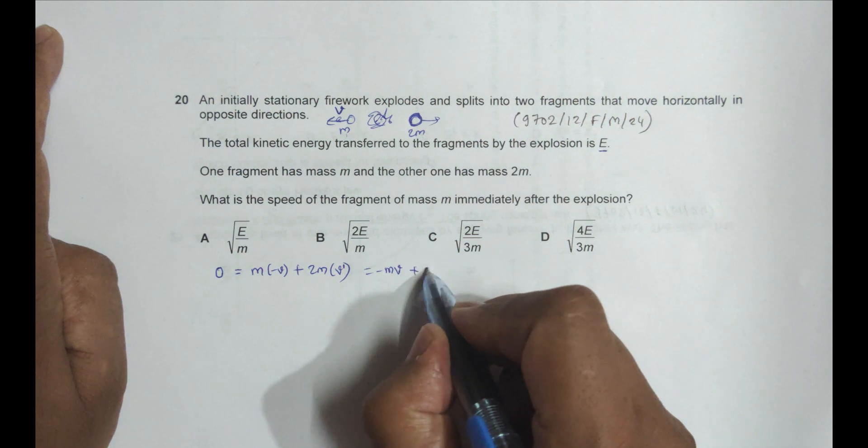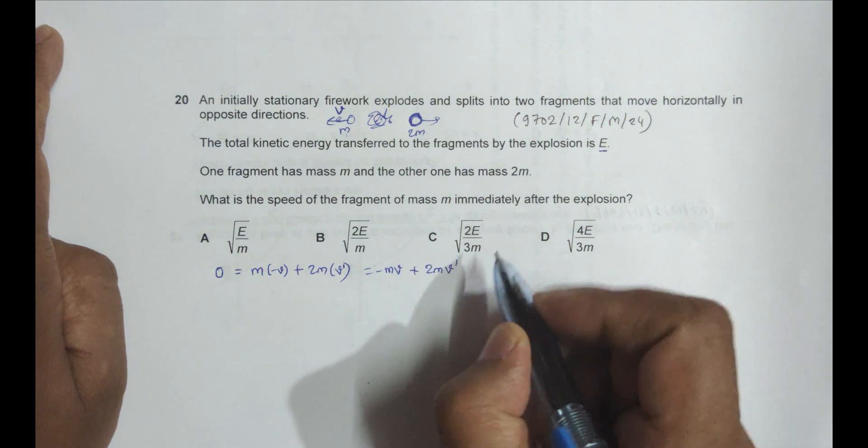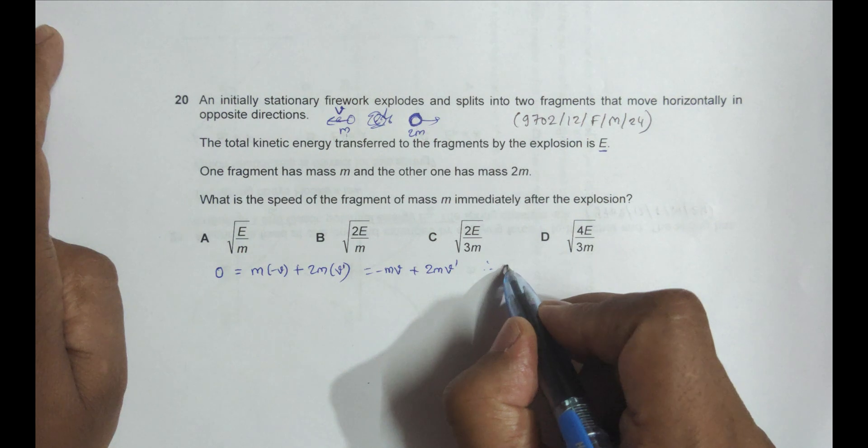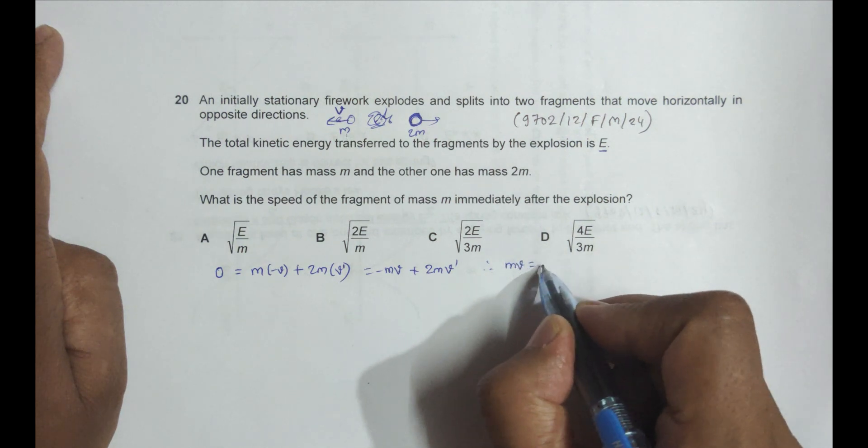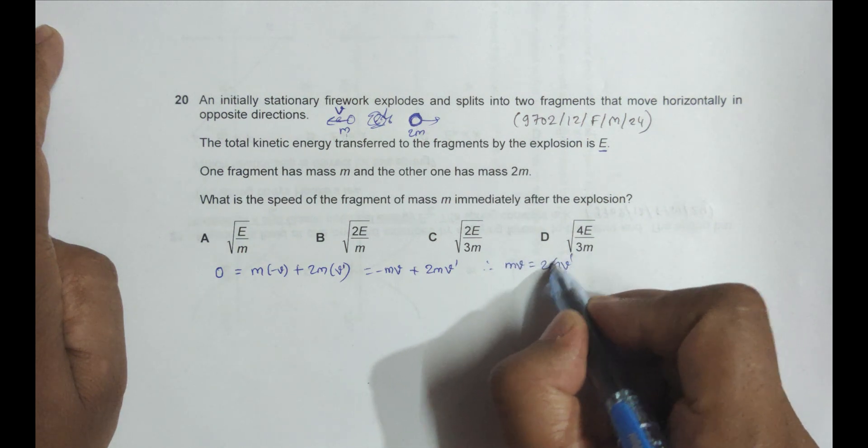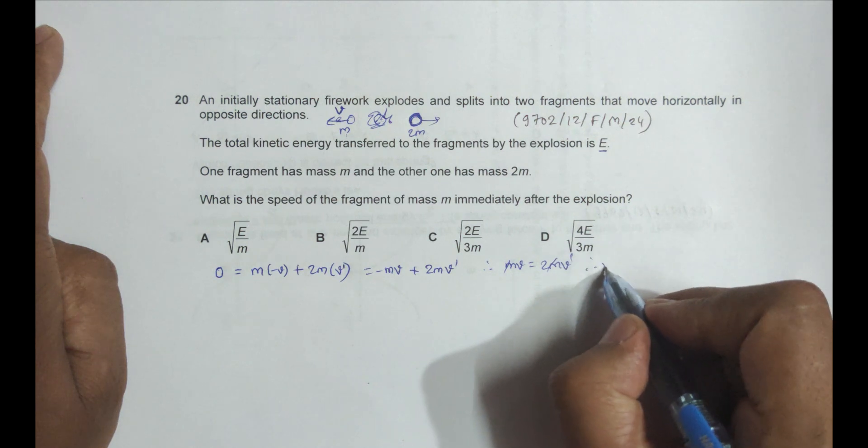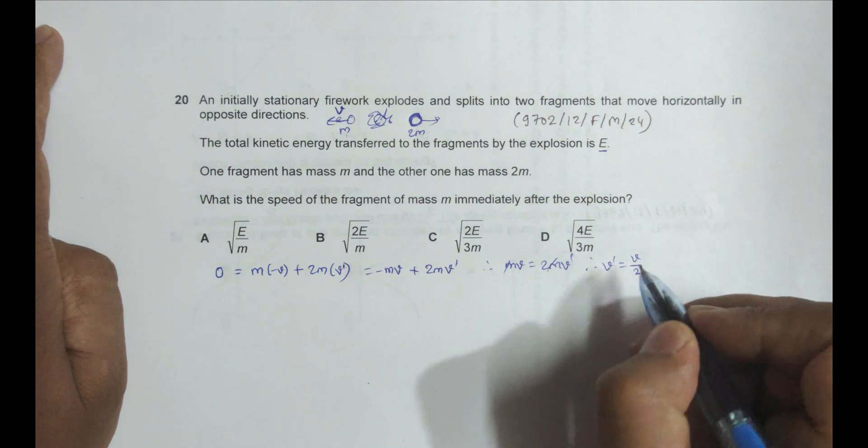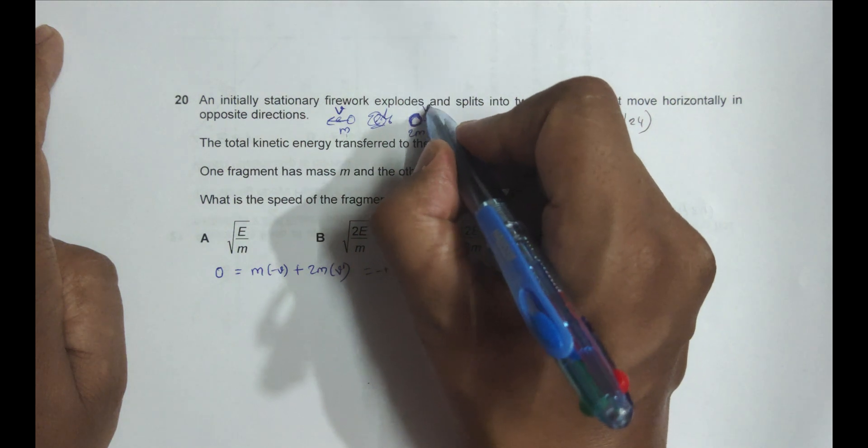Therefore MV equals 2MV'. M cancels, which gives us V' = V/2. So the velocity of this body is V/2.